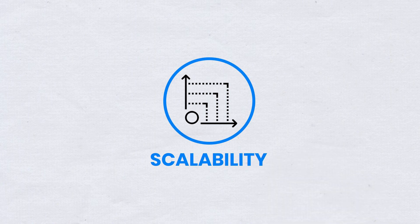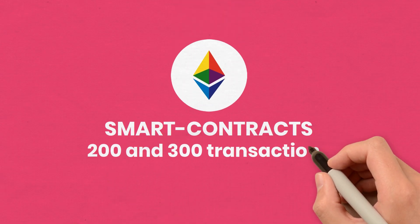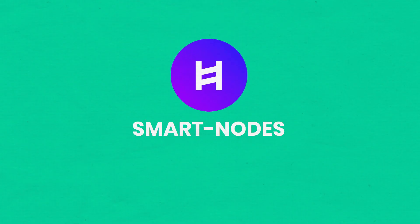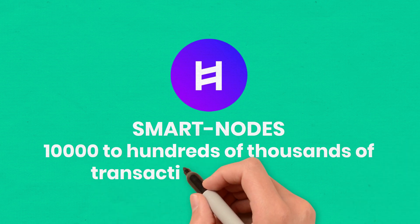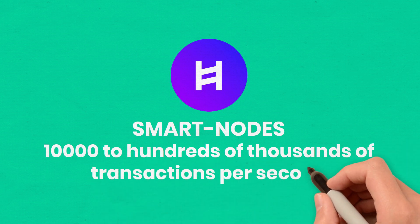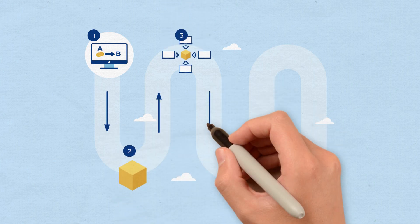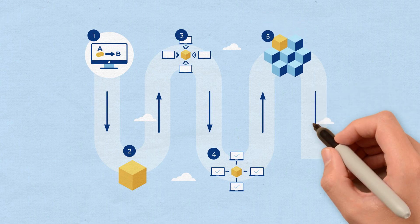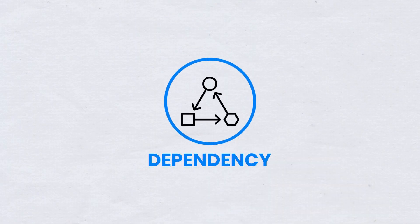Scalability: while Hedera smart contracts perform between 200 and 300 transactions per second, smart nodes can perform at Hedera native speeds, which go from 10,000 to hundreds of thousands of transactions per second with sharding. The transaction throughput difference between the two is astonishing, especially regarding potential enterprise use cases and mass adoption of the Hedera ecosystem.